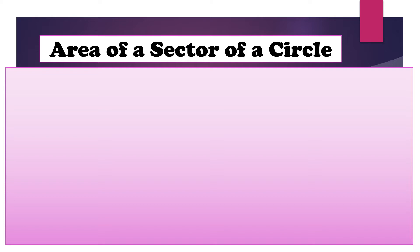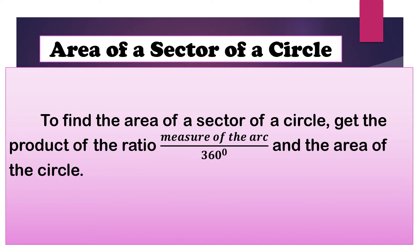Let us discuss now the process on how to determine the area of a sector of a circle. To find the area of a sector of a circle, we will just get the product of the ratio — the measure of the arc over 360 degrees — and the area of the circle.